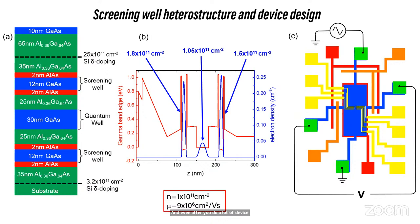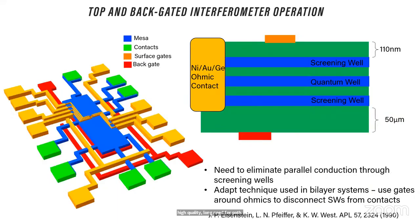And even after you do a lot of device processing, these are still in that central 2DEG, very high quality, long mean free path. Correlation physics still dominates. So we pay a price in complexity, but we basically do what Charlie was trying to do, only better. That's a good thing. I don't get to say that very often. Anyway, so that was a joke.